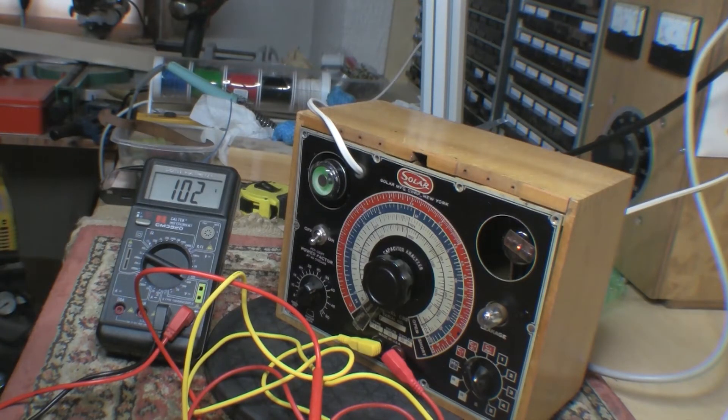Okay guys, so here's the setup. I just have a 600 volt electrolytic in the leakage tester here.